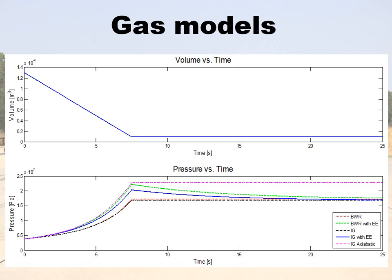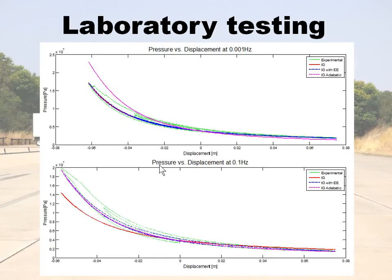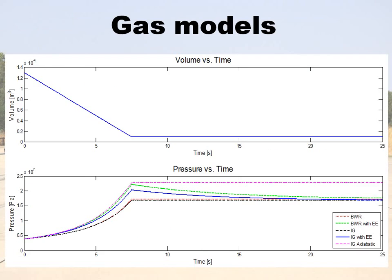In a simple simulation with a ramp input, the three models without the energy equation — shown in purple, red, and black — increase in pressure and then stay at that pressure once stopped. The two models with the energy equation also increase in pressure but then show a pressure drop over time, accounting for heat dissipating through the accumulator wall. This thermal time constant, where pressure regresses to 63% of its value, was experimentally determined by Professor Els.